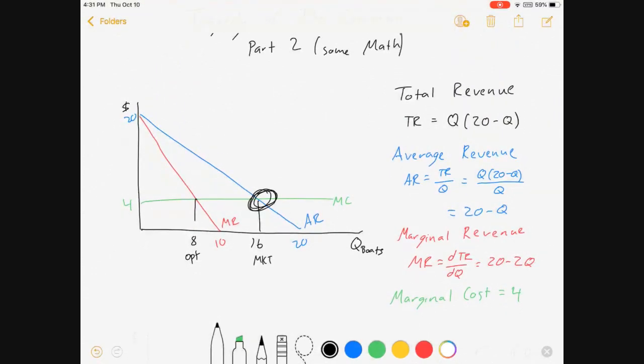I will find the market quantity by setting average revenue equal to marginal cost. And I will find the optimal quantity by setting the marginal revenue equal to the marginal cost.